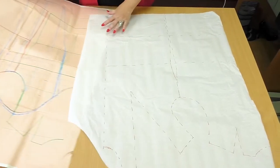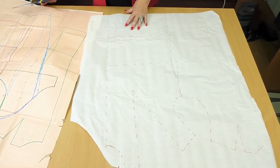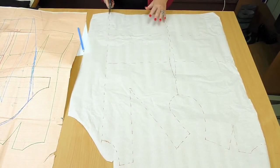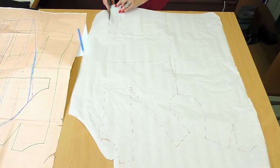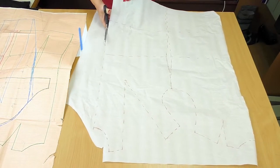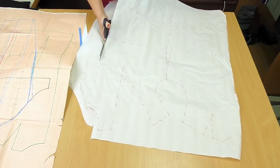Of course the work starts with a basic pattern. Mine was made on the basis of my 10 measurement system. I'll transfer it to the tracing paper. I'll prepare the front and the back and we'll make a pattern for this dress.